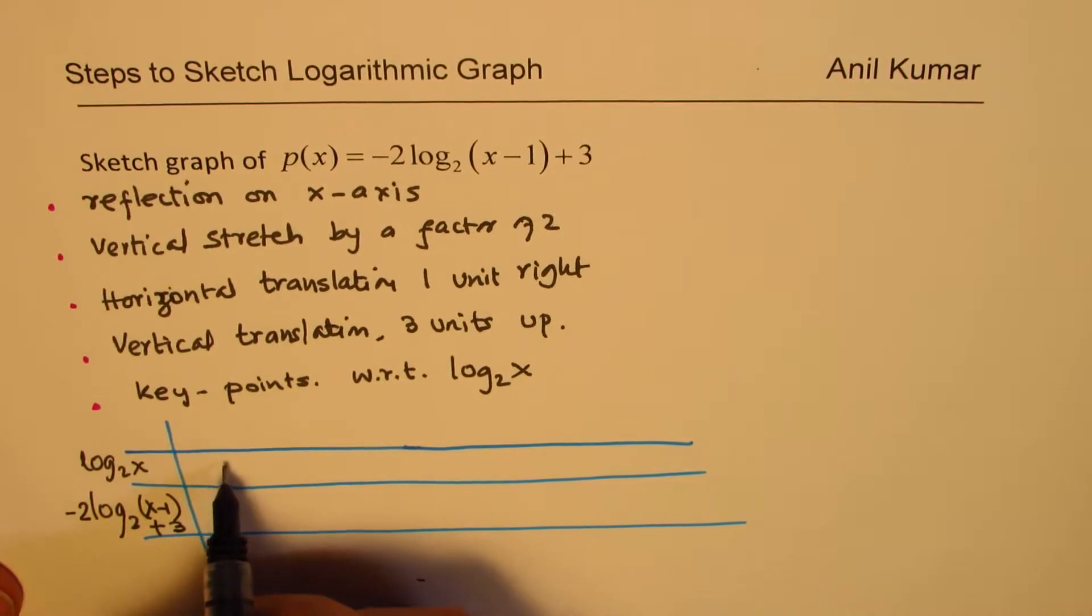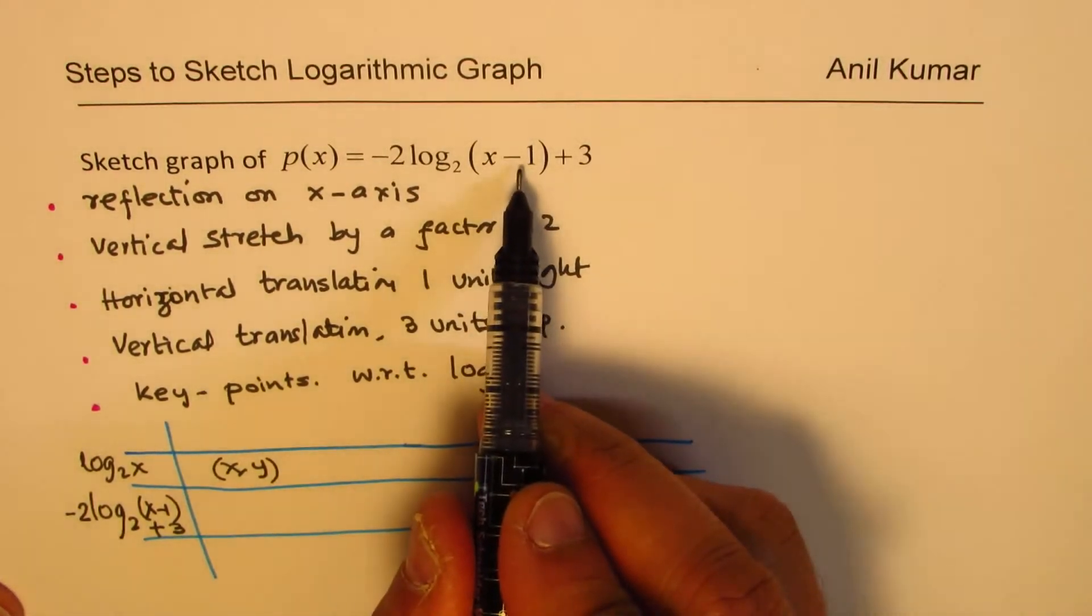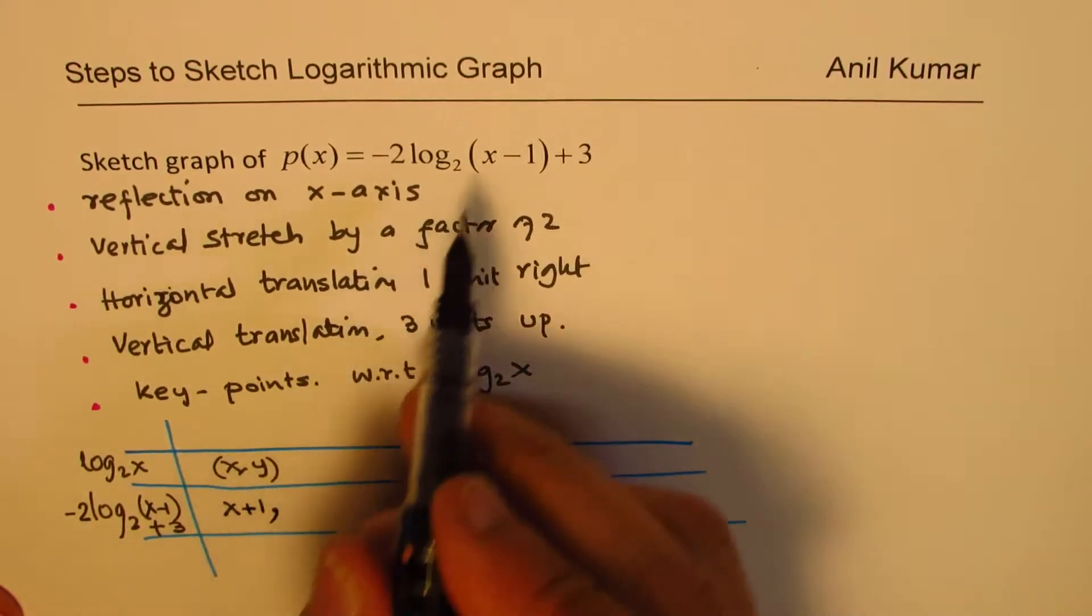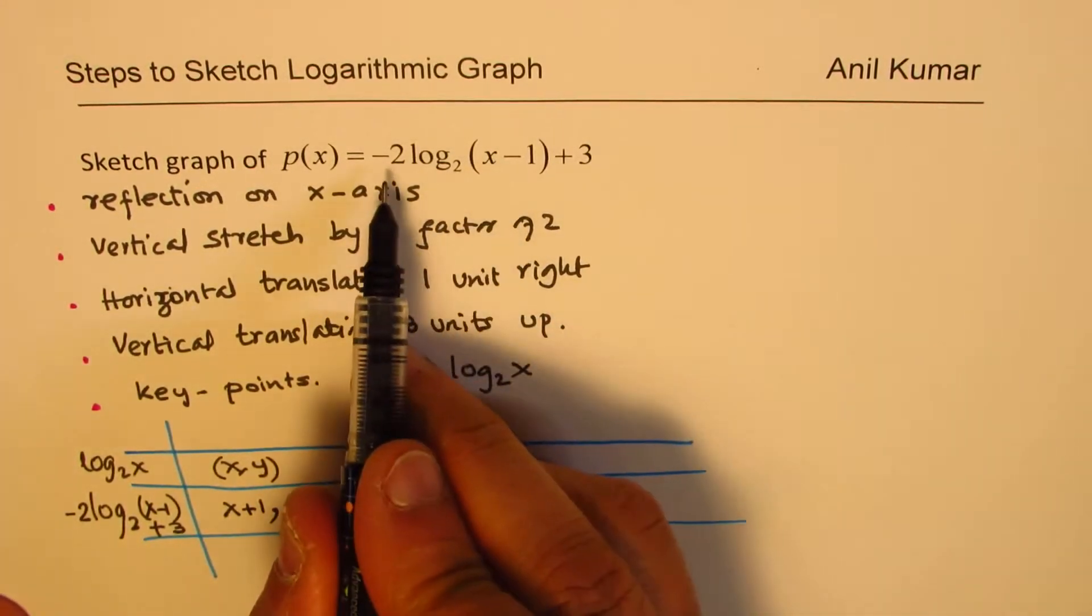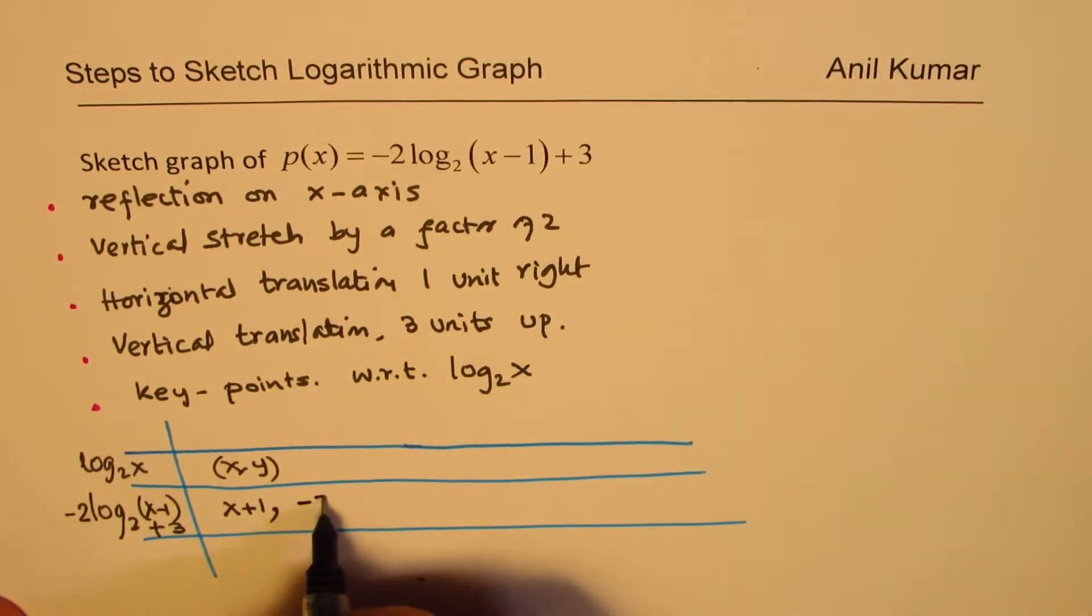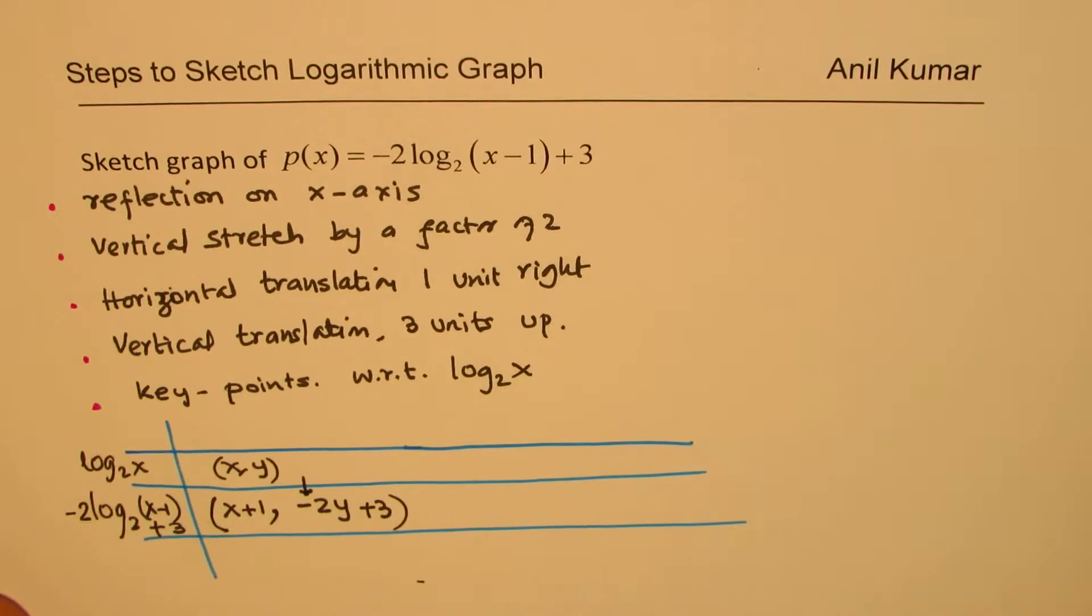So if we have a point in general which is xy how is that going to get transformed? As far as the x value is concerned we are only adding 1 to it so it becomes x plus 1. As far as the y value is concerned we are multiplying by minus 2 and then adding 3. So we get minus 2 times the y value plus 3. So that is the basic transformation. Do you see the transformation formula here? That is how we are going to transform.